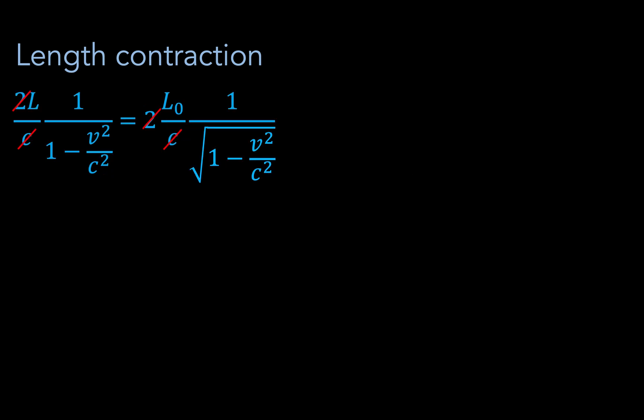From here, we can just cancel 2 over c and multiply both sides by 1 minus v squared over c squared to get our length contraction equation, where L0 is the proper length of the object and L is the contracted length. We can see this because the square root of 1 minus v squared over c squared is always less than 1, so L is always going to be less than or equal to L0.